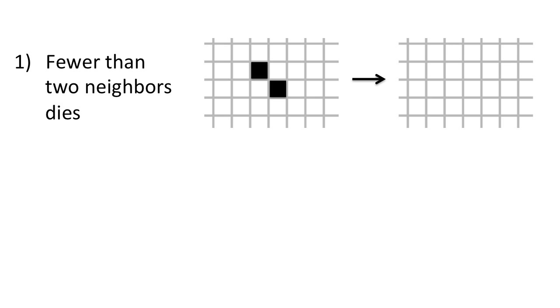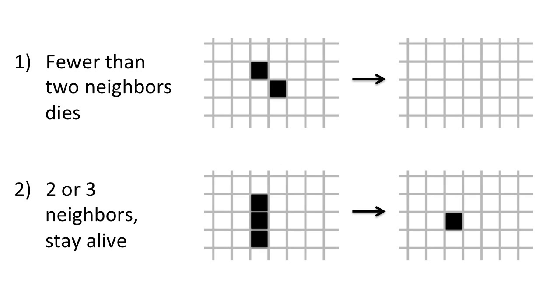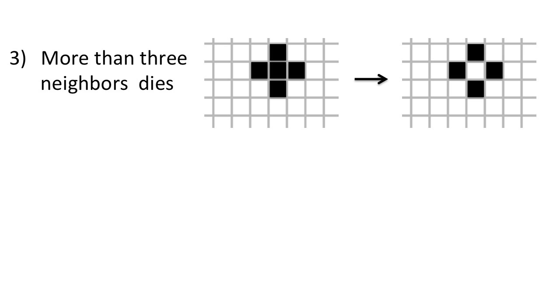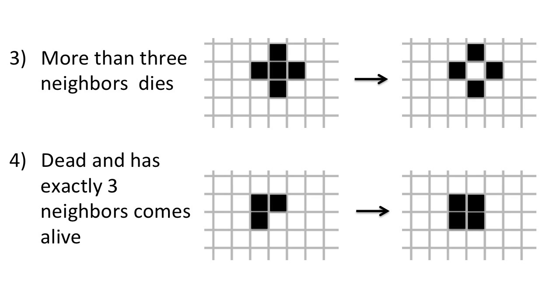1. Any live cell with fewer than two live neighbors dies, as if caused by underpopulation. 2. Any live cell with two or three live neighbors lives on to the next generation. 3. Any live cell with more than three live neighbors dies, as if by overcrowding. And 4. Any dead cell with exactly three live neighbors becomes a live cell, as if by reproduction.